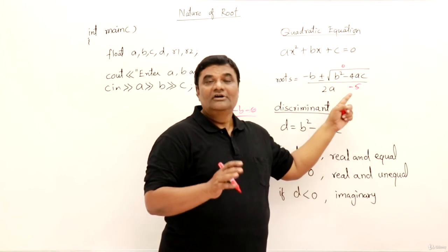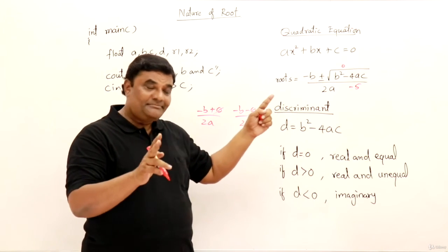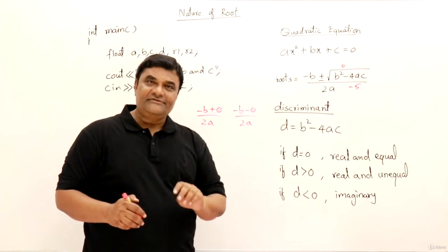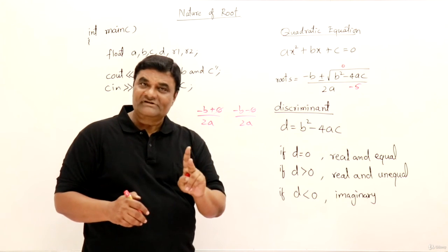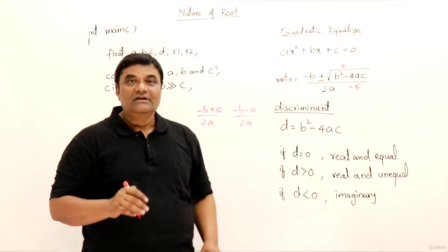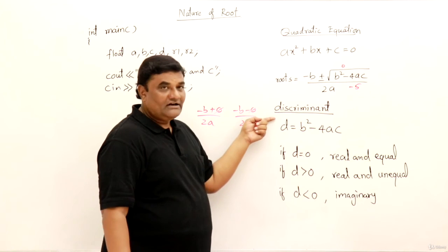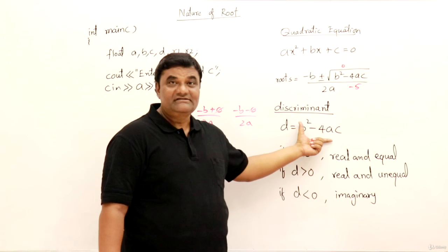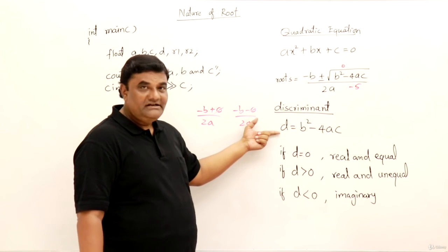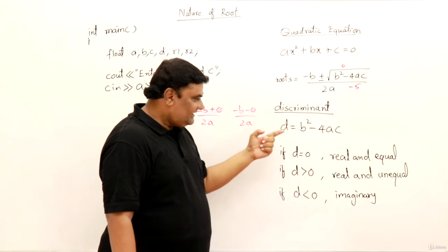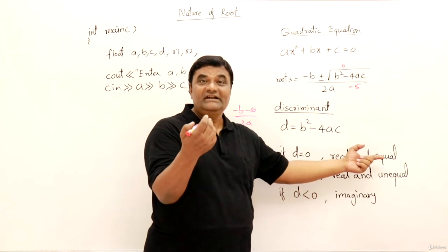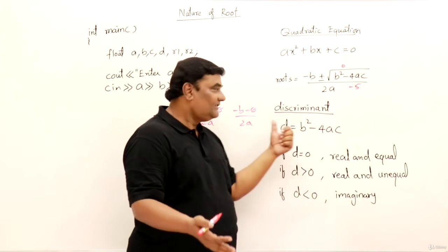So we learn two things. If that portion is 0, roots are same only. If that portion is negative, we cannot find roots. If it is positive, then we have two roots and they are not same, they are different. So that's what. Look at this now. Discriminant. So this b square minus 4ac is called as discriminant. Let us say d. Call it as d.